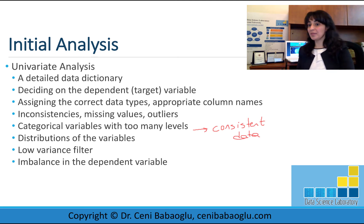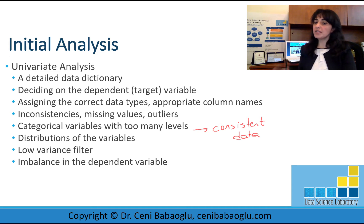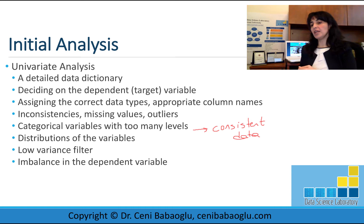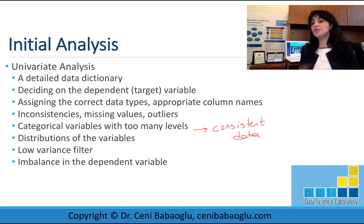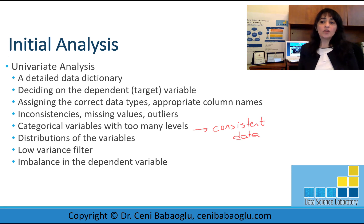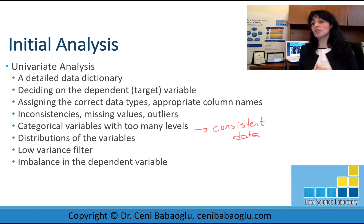How about the dependent variable — our target variable? The distribution of the target variable is something we should check as well. Say you have a binary dependent variable and 90% of it is assigned as 1 and the rest as 0 — this means you have an imbalanced dataset. If you run a machine learning algorithm on imbalanced data, your model will have many more examples from the majority class, which will cause problems. At this stage, we will know whether we have an imbalanced dataset or not.